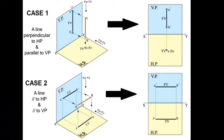In this lecture, we will see the projection of lines when placed in different orientations. We have five different cases. Let us take the first case, case number one.